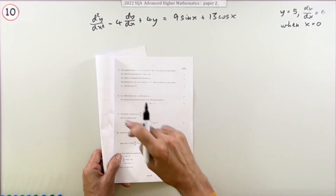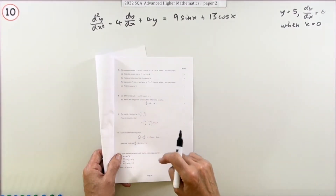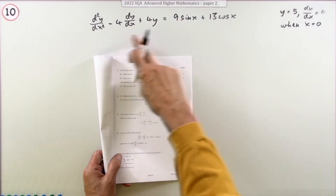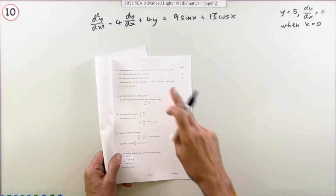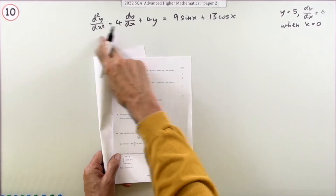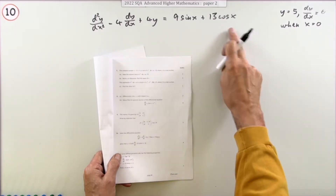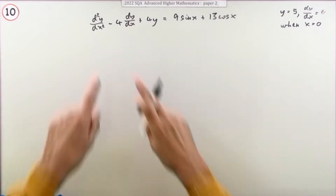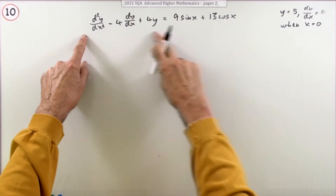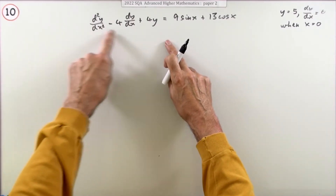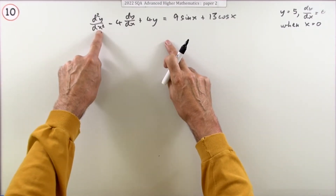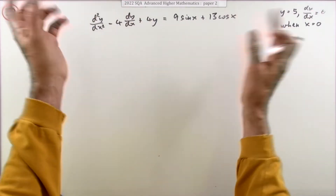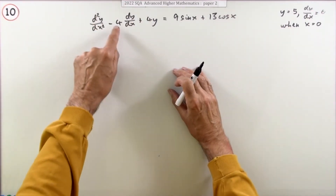Question 10 from the 2022 Advanced Higher Paper 2, worth 9 marks — it's the second order differential equation question. You have a second order because you've got up to the second derivative. It's the easy type, and it's the only type you do at Advanced Higher: it just has constant coefficients.